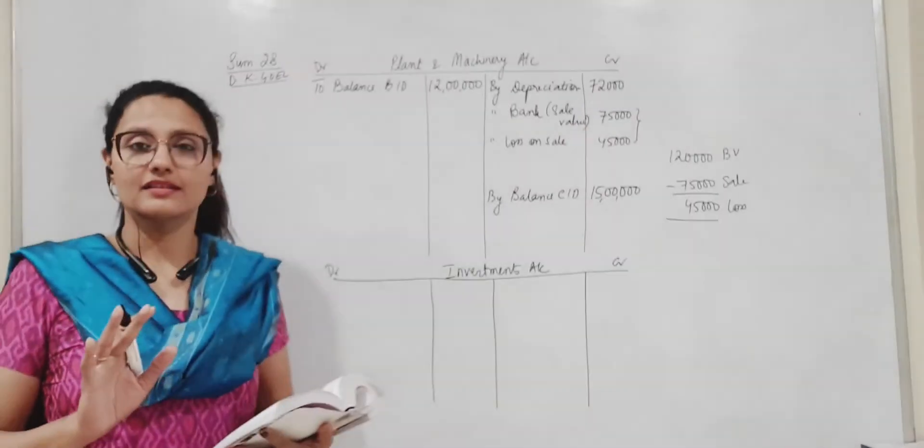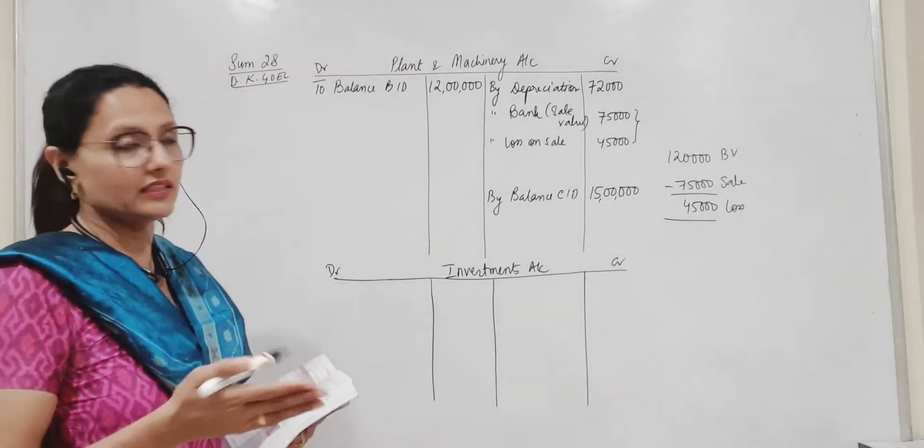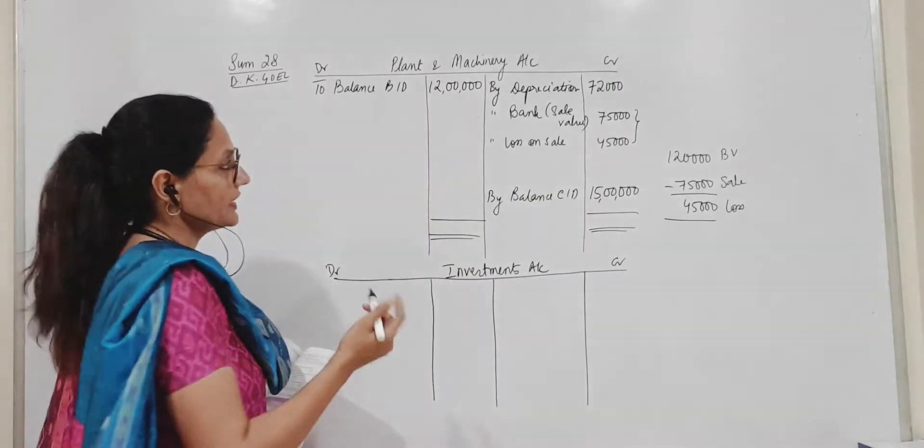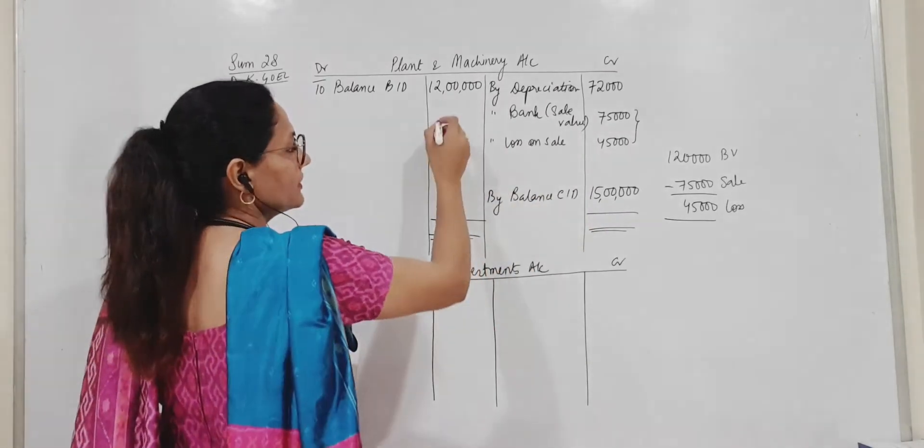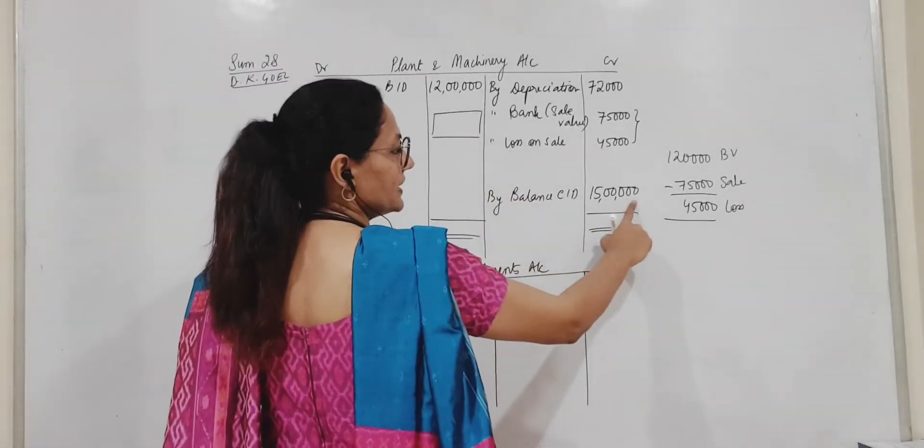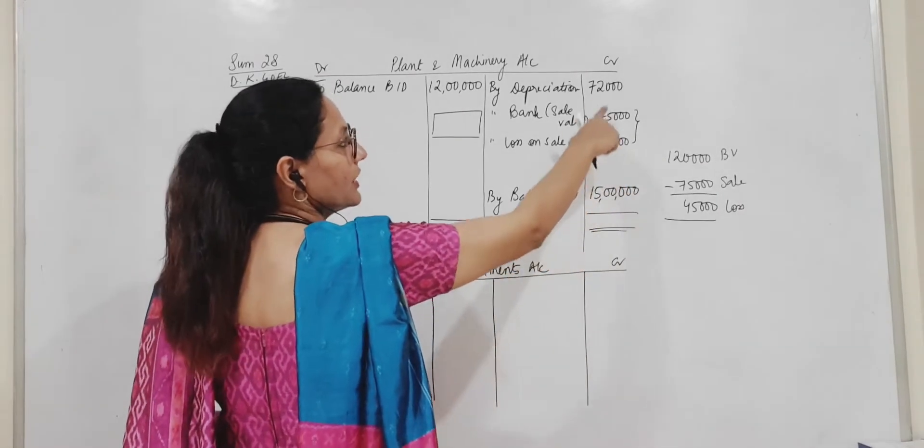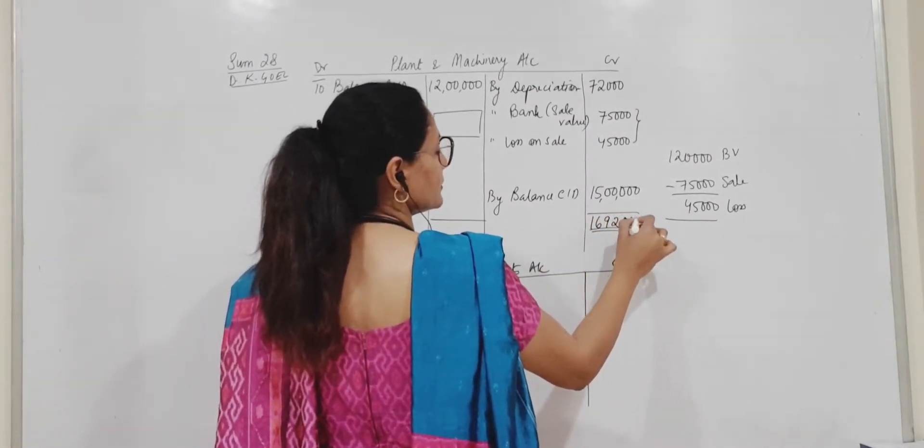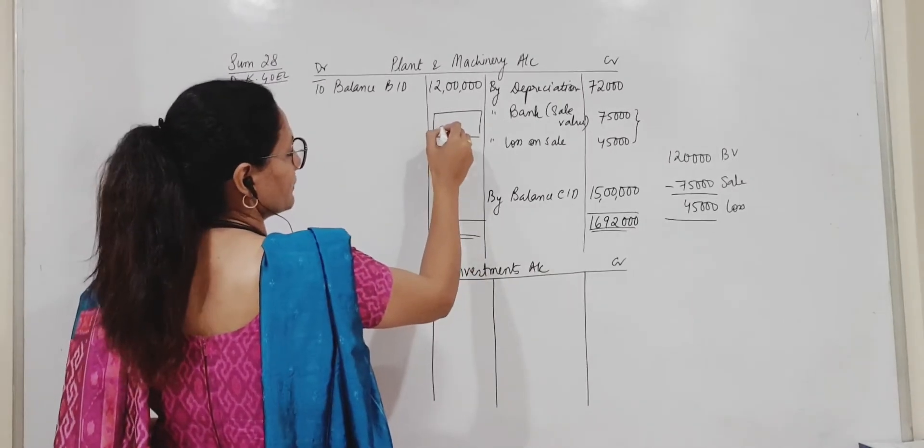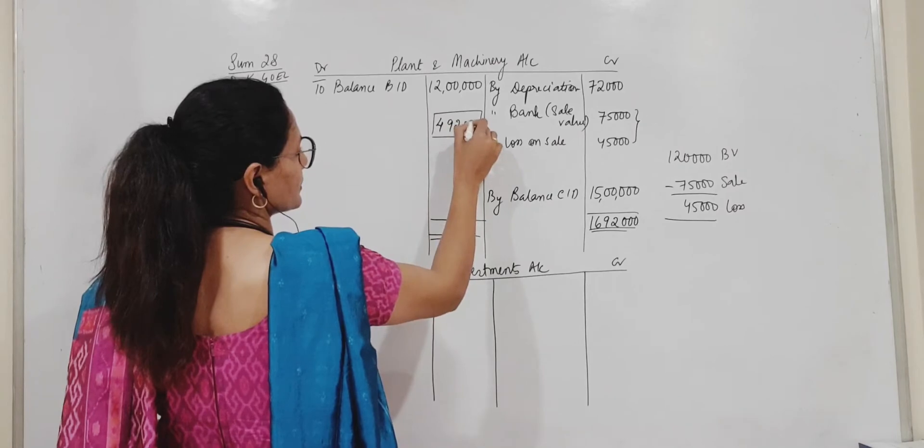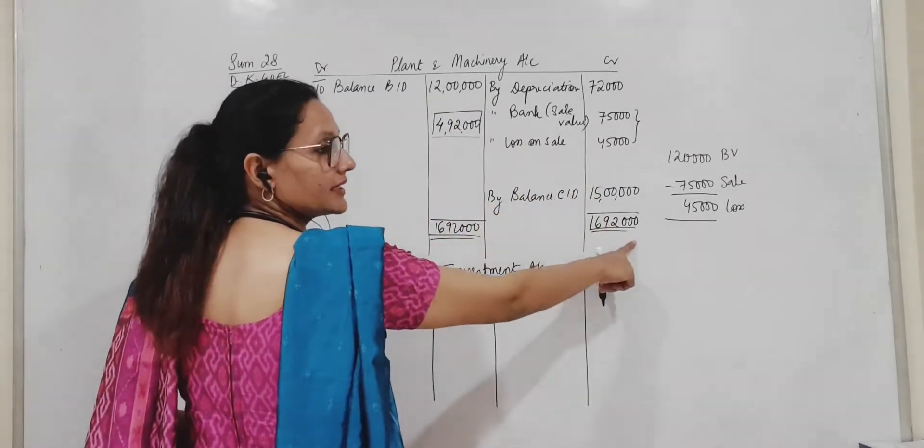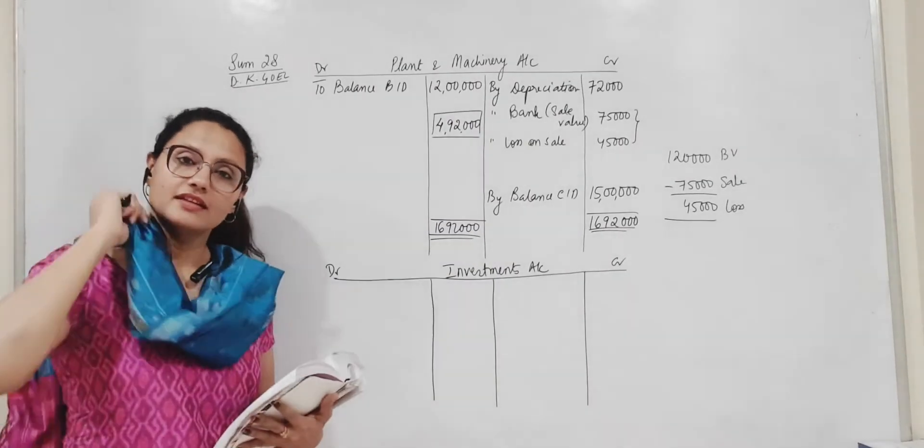Nothing else is given regarding the plant and machinery account. So now if I tell you that if these are the only transactions, then my credit should have been equal to the debit side because balance brought down we have, balance carried down we have. But I see that this credit side is much more than the debits. So on the debit side there is a figure that is missing here. And my objective of making this account is to find this missing figure. This is 15 lakhs. This is 1 lakh 20,000. 16 lakh 20,000 plus 72, so 16 lakh 92,000 is the total here.